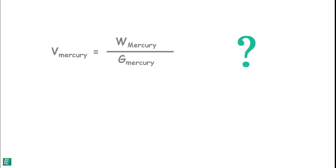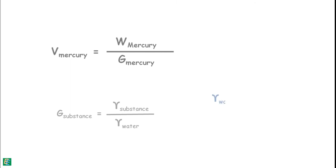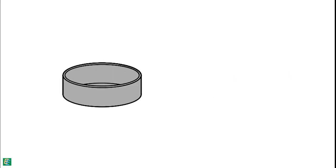Specific gravity of any substance is the unit weight of that substance divided by the unit weight of water. The unit weight of water is considered as 1 gram per cc and the unit weight of mercury is taken as 13.6. The volume of the shrinkage dish is equal to the volume of this mercury.